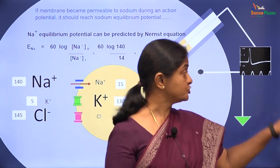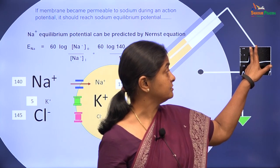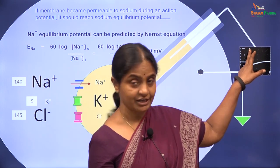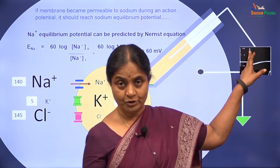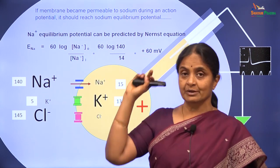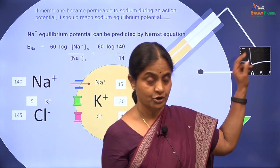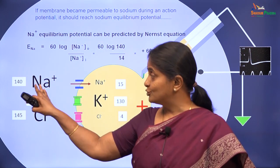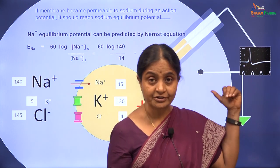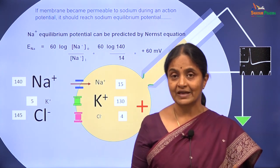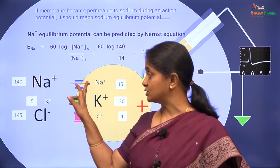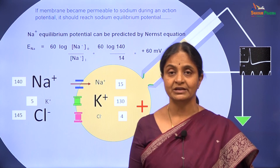So when you had 140 millimolar sodium, the action potential you record is say plus 40. You would notice it is not equal to the sodium equilibrium potential — it is less; we will consider why later on. If you changed external sodium, we have to see if the height of the action potential reduces. Only then can we confirm that the action potential is a case where sodium channels have opened up on the membrane.